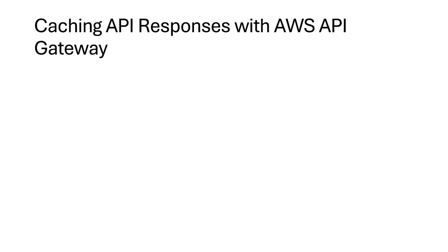Hey everyone, welcome back to the channel. Aditya here. Today we are going to explore how caching works in AWS API Gateway and why it's a powerful feature to optimize your API's performance. We will also cover cache invalidation, which is crucial for maintaining the accuracy of your cache data. Let's dive right in.